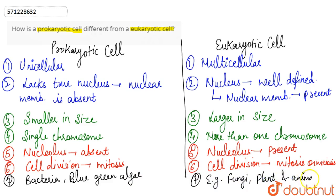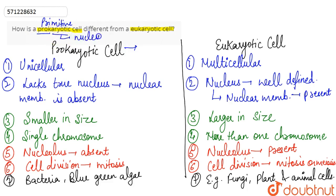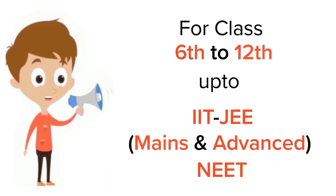As the name suggests, 'pro' means primitive and 'karyotic' relates to the nucleus. So prokaryotic cells are essentially cells that have a primitive nucleus, while eukaryotic cells are the cells that have a well-defined, true nucleus.